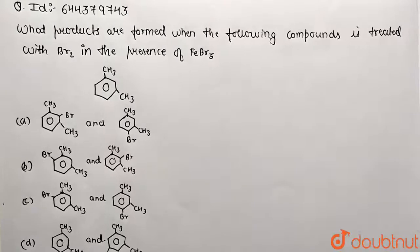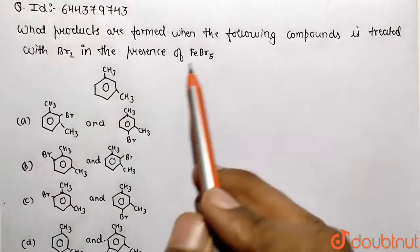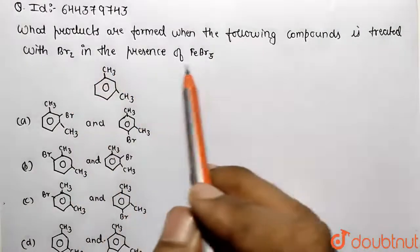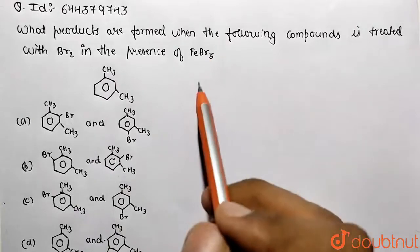Hello students, in this given question we need to ask what products are being formed when the compound is treated with Br2 in the presence of FeBr3 solution.